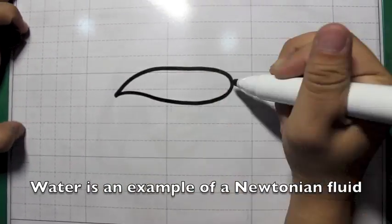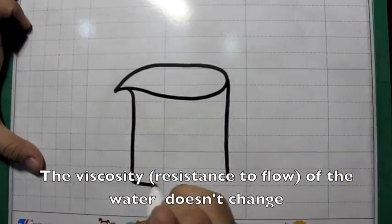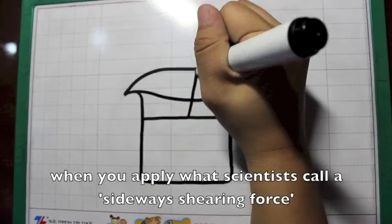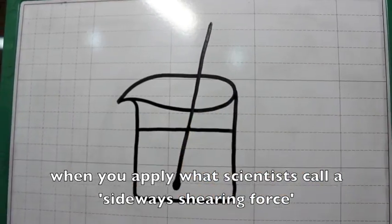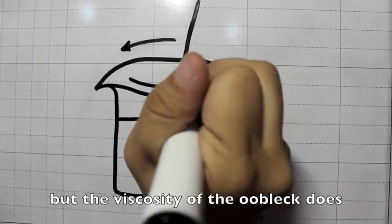Water is an example of a Newtonian fluid. The viscosity, or resistance to flow, of the water doesn't change when you apply what scientists call a sideways shearing force, but the viscosity of the OOBLEC does.